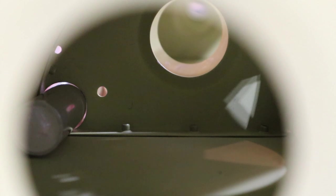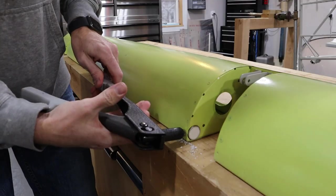Then I slid the tube into place and riveted it with stainless steel flush head pull rivets.